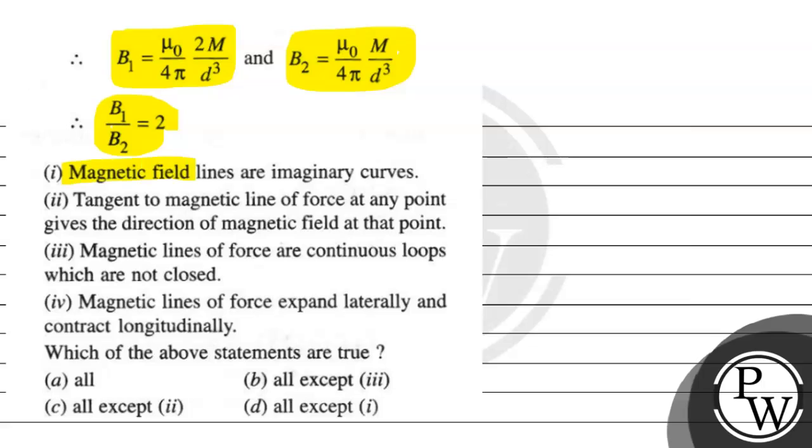First option is magnetic field lines are imaginary curves. The second, tangent to magnetic field lines of force at any point gives the direction of the magnetic field at that point. The third, magnetic lines of force are continuous loops which are not closed. And the fourth, magnetic lines of force expand laterally and contract longitudinally. Which of the above statements are true? Option 1 is all. Option 2, all except third. Option 3, all except second. And option d, all except first.